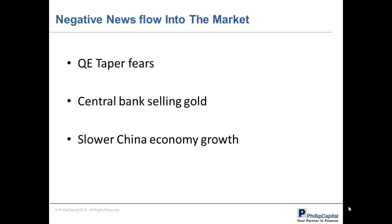Main key events that attributed to the drop in gold prices were fears of QE tapering when Ben Bernanke suggested a softening stance in its asset buying program back in April during the FOMC meeting, and rumors that Cyprus Central Bank was selling gold to pare down its debt level. This caused much negative sentiment in the market and fund managers were dumping gold-related instruments in search for lower risk assets. Furthermore, massive outflow of ETP-backed gold instruments aggravated investor sentiment. The market was also concerned about China's slower economic growth, which affected overall market sentiment.